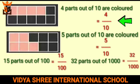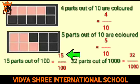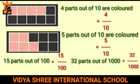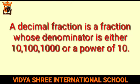The fractions 4 by 10, 5 by 10, 15 by 100, and 32 by 1000 have either 10, 100, or 1000 as their denominators. Such fractions are called decimal fractions. A decimal fraction is a fraction whose denominator is either 10, 100, 1000, or a power of 10.